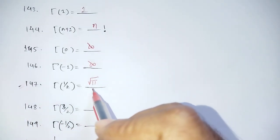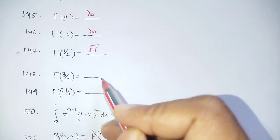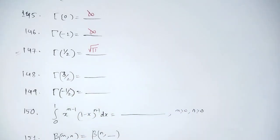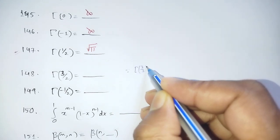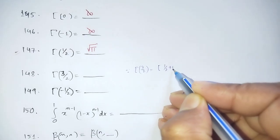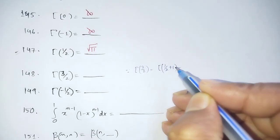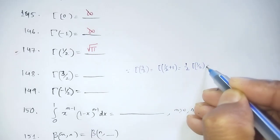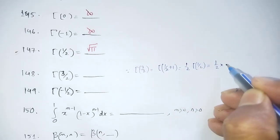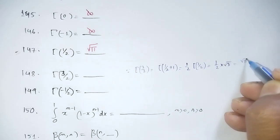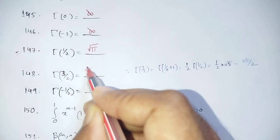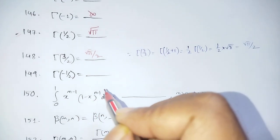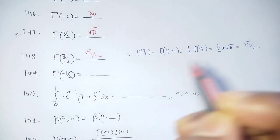Most important values: Γ(1/2) = √π. Γ(3/2) = (1/2)·Γ(1/2) = (1/2)√π. These are essential values of the Gamma function to remember.